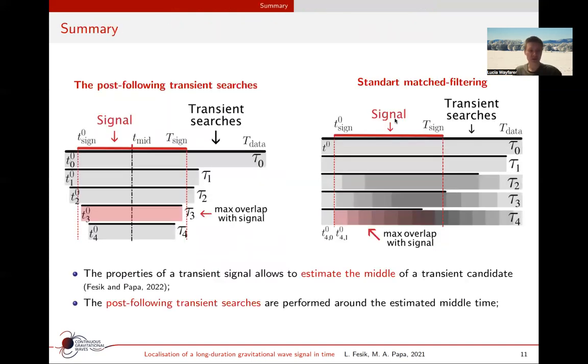Let us summarize. We study the possibility to search for a transient signal when the start time and the duration of the signal are unknown. The basic method is a matched-filtering transient search, which is a template search with a variety of waveforms in frequency range over different combinations of time spans and start times. The new search pipeline that we propose, after considering the properties of a transient signal in an all-time search, focuses on post-following transient searches around the estimated middle time for every candidate from an initial search.